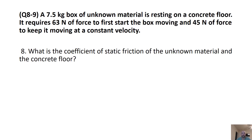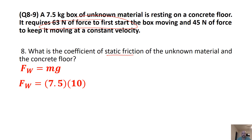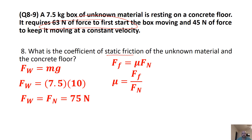For questions 8 and 9, a 7.5 kilogram box of unknown material is resting on a concrete floor that requires 63 newtons of force to first start the box moving, and 45 newtons of force to keep it moving at constant velocity. For the coefficient of static friction: we solve for the weight — 7.5 kilograms times 10 equals 75 newtons, which is also our normal force. We use 63 newtons as our force of friction, divide by the normal force of 75, and get a coefficient of static friction of 0.84.